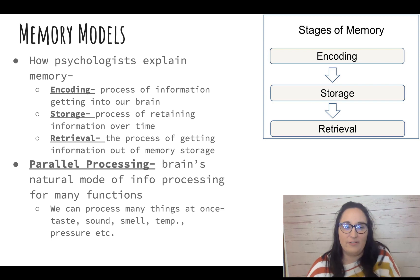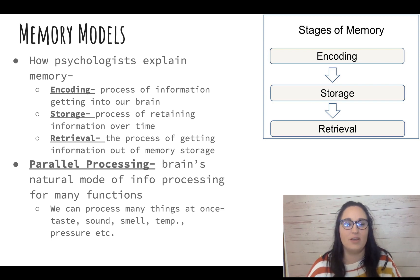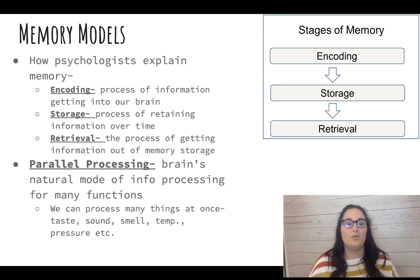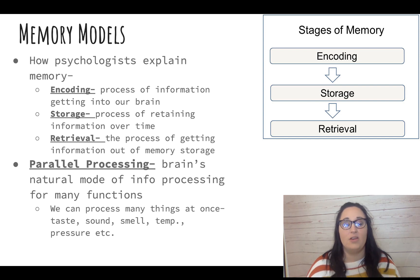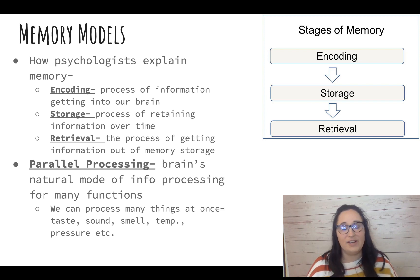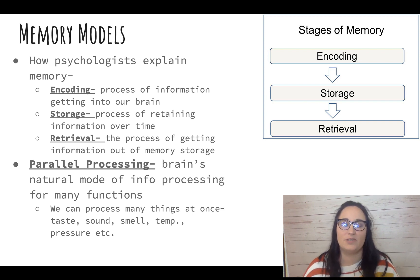I like to think of this as a Word document. You type in the information, paying attention to it and typing it in — that is encoding. You hit the save button on your Word document — you are storing that information. And when you later go to look for that document, you are retrieving it from your files. Our brain doesn't really work like a computer and save files so neatly, but it helps visualize the stages of memory.